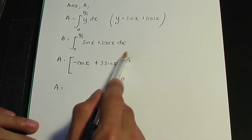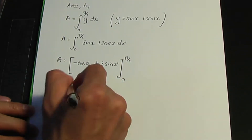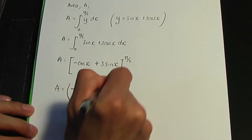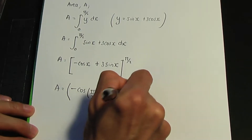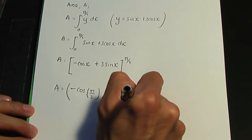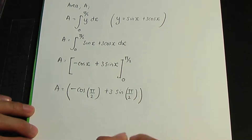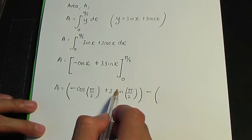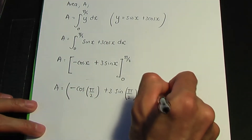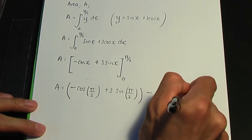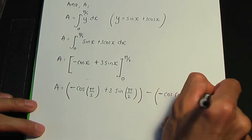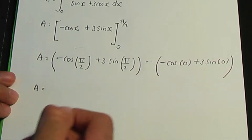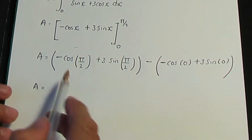We substitute our limits — the upper limit goes in first. The upper limit is pi over two, so we have minus cos(pi/2) plus 3 sine(pi/2). Then we subtract the lower limit result: minus cos(0) plus 3 sine(0).